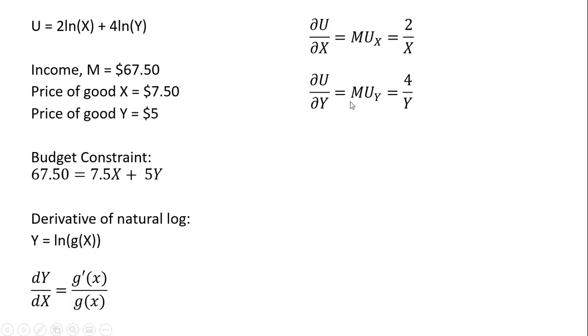The marginal utility of good Y - we're going to take the partial derivative of the utility function with respect to good Y. Following this rule of taking the derivative of a natural log, what's in parentheses, we move that down into the denominator.